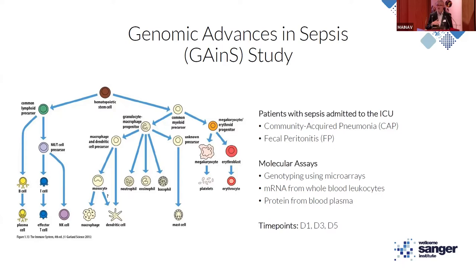We have taken blood at days one, three, and five post admission to the ICU. From these blood samples, we've collected a lot of data. The three data types I'll talk about today are from molecular assays: genotyping from microarrays, mRNA from whole blood leukocytes — all cells other than platelets and erythrocytes — and protein from whole blood plasma.